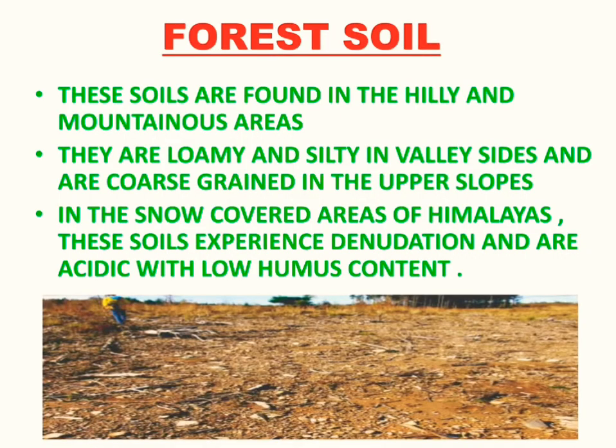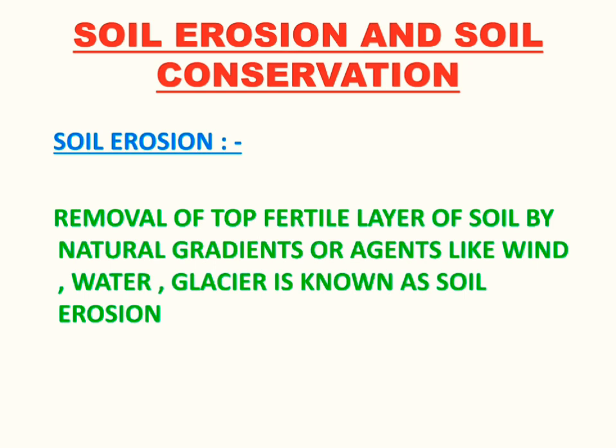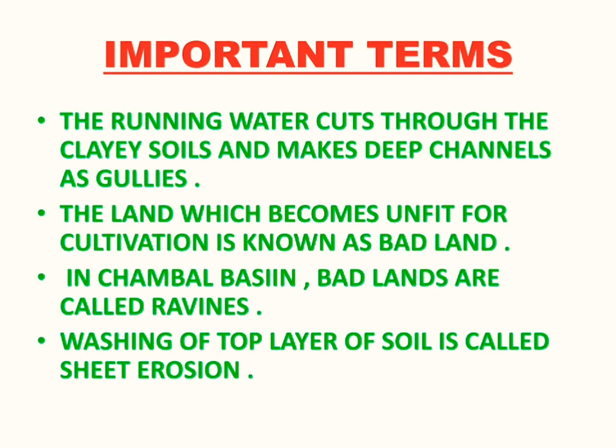Moving ahead to the last topic of this chapter: soil erosion and soil conservation. For revision, the definition of soil erosion is: the removal of the top fertile layer of soil by natural agents like wind, water, or glacier is known as soil erosion. There are some important terms you need to memorize from this topic.